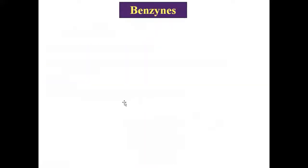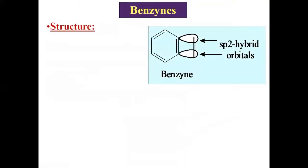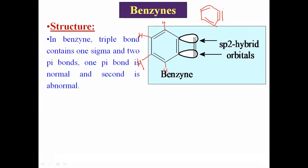Let us look at the structure of benzyne. In benzene, the hybridization of each carbon is sp2. In benzyne, there is also sp2 hybridization for each carbon, and each carbon normally has one hydrogen atom attached — except for the two carbons involved in the triple bond. The remaining four carbons have four hydrogen atoms. There is a carbon-carbon triple bond, and those carbons have sp2 hybridization with one sigma and two pi bonds.